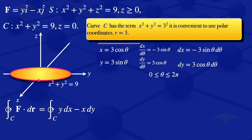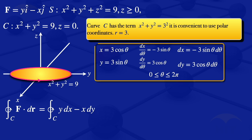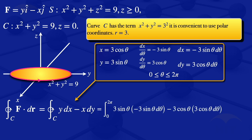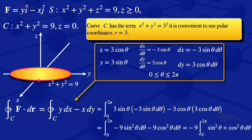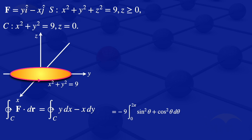Substituting x, y, dx, and dy into the integral, we get the integral from 0 to 2π of 3 sin θ × (-3 sin θ dθ) minus 3 cos θ × 3 cos θ dθ. Simplifying, this becomes the integral from 0 to 2π of -9 sin²θ dθ - 9 cos²θ dθ. Factoring out the common factor -9, we have -9 times the integral from 0 to 2π of (sin²θ + cos²θ) dθ.